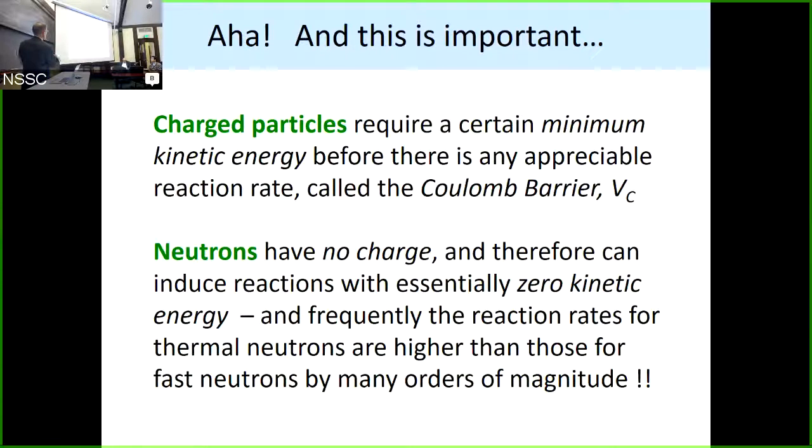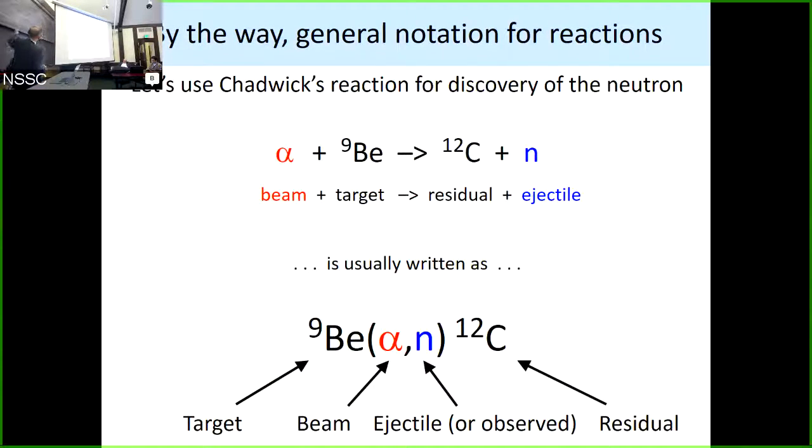Particles require certain minimum kinetic energy before there's any appreciable reaction rate. Neutrons have no charge and can induce reaction to essentially zero kinetic energy. And what's interesting is, thermal neutrons, in fact, what's called the cross-section, is in general higher for slow neutrons than fast neutrons. That's sort of a general principle. Hanging in there, as I say, this is the last sort of technical foundational fundamental thing. Everything else from here on up, we're going to start talking about technology and applications.